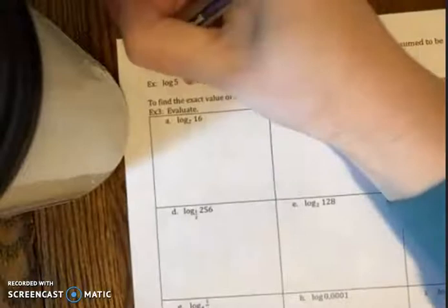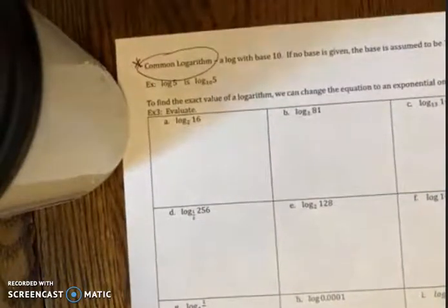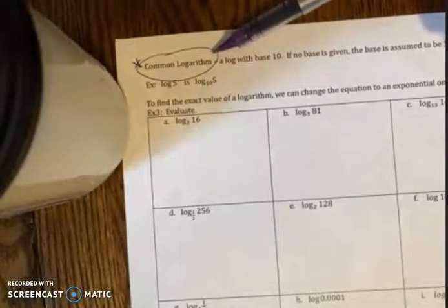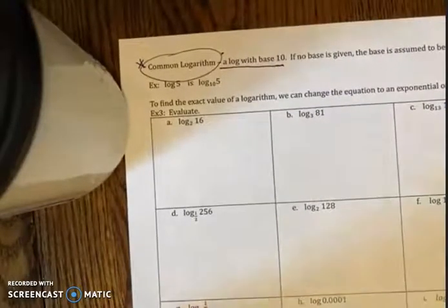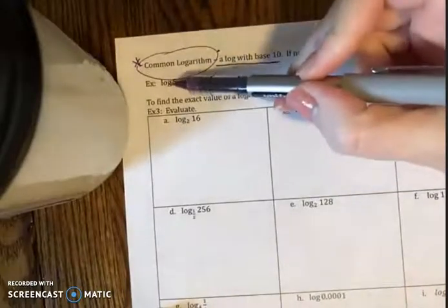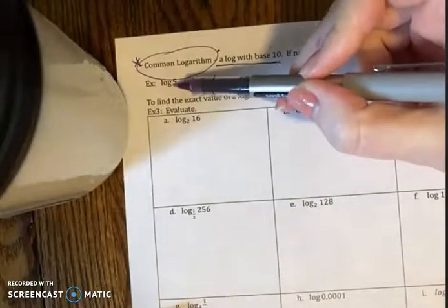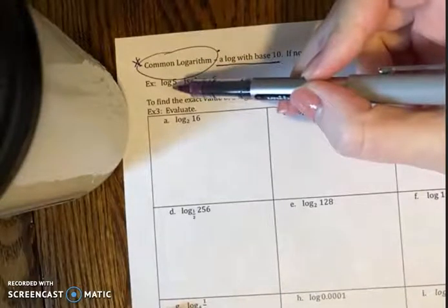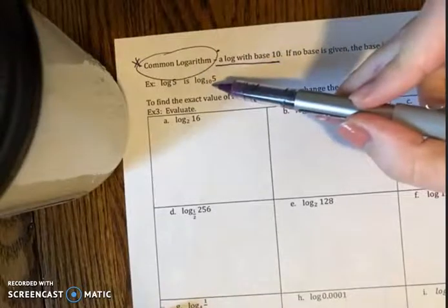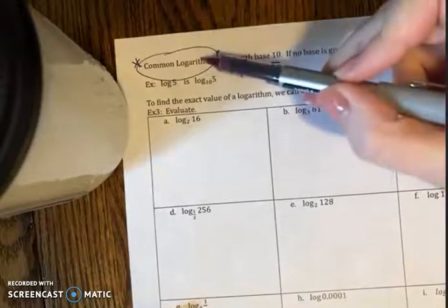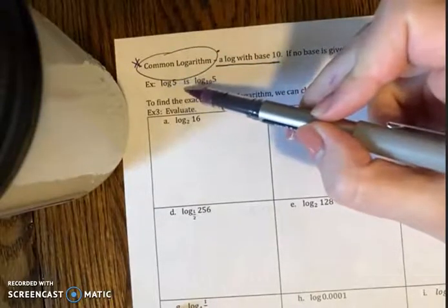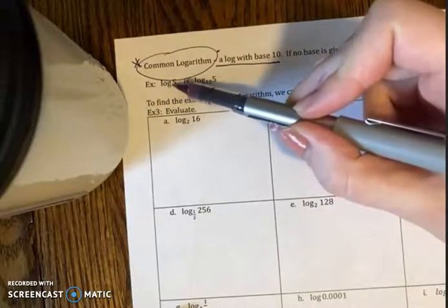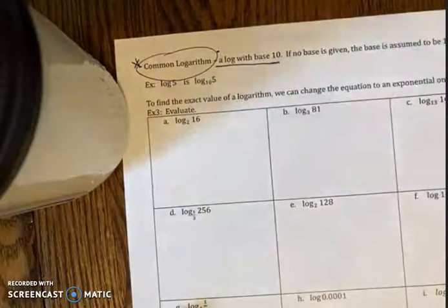Next, just some more vocab. I want you to circle this, star it, or highlight it. It's just saying that we have something called a common logarithm. And a common logarithm is a log with a base 10. So if I ever see something that just says log of a number, it doesn't specifically declare what the base is, it's understood to be 10. So once again, the common logarithm looks something like this. Even though they didn't specify what that base is, it is understood to be 10.